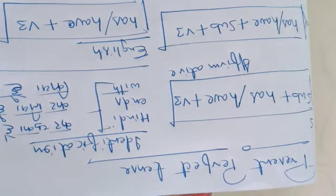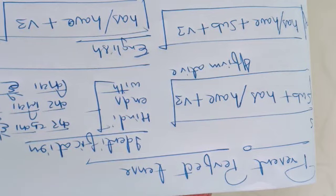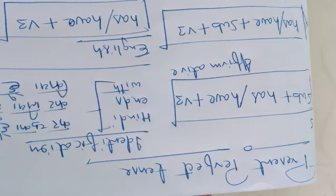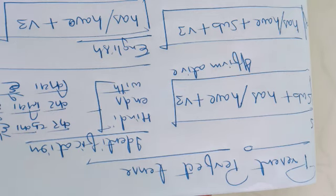Now moving on to present perfect tense. First, the identification — how would you identify a present perfect tense? In Hindi, we always identify a tense from the last word. For present perfect tense, in Hindi it will end with 'kar chuka hai,' 'kar liya hai,' or 'kia hai.' It is not just 'chuka hai' or 'chuki hai' — any of these endings can indicate present perfect tense.